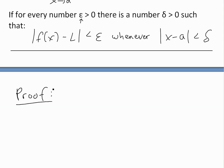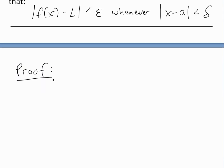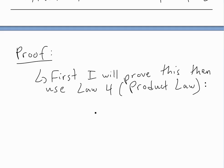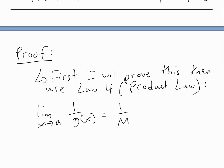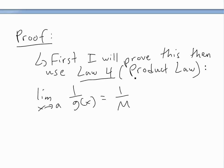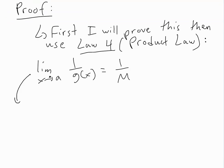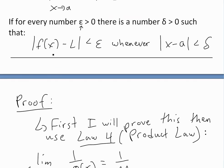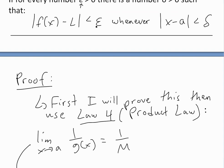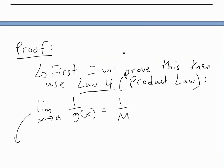Now I'll look at the proof of the quotient law. Before getting to the full proof, I'll first prove this intermediate result: the limit as x approaches a of 1 divided by g(x) equals 1 divided by M. Once I prove this, we can use law 4, the product law — shown in my earlier video — to prove the quotient law. To prove this, we apply the precise epsilon-delta method.